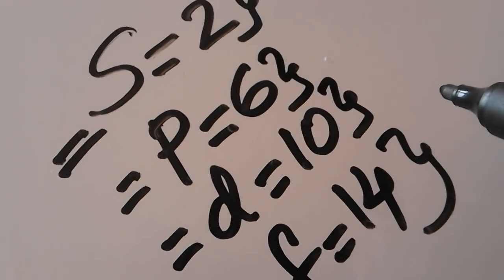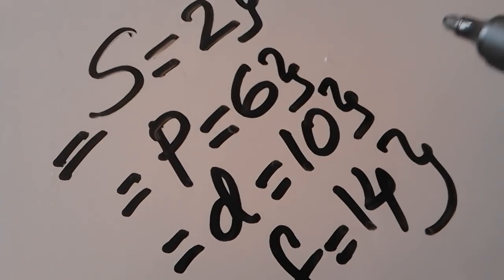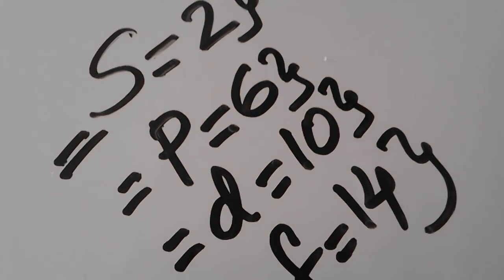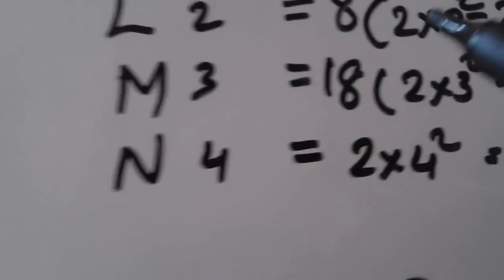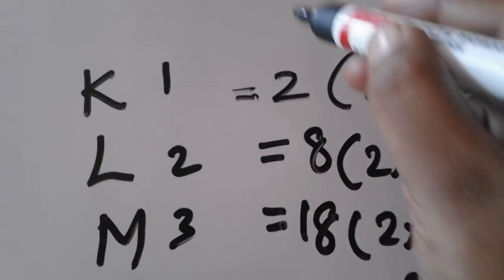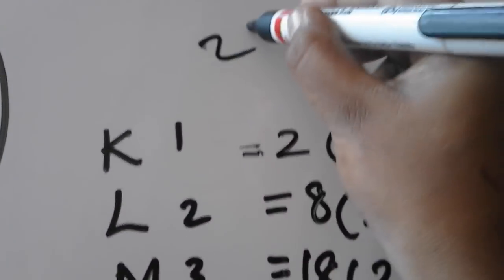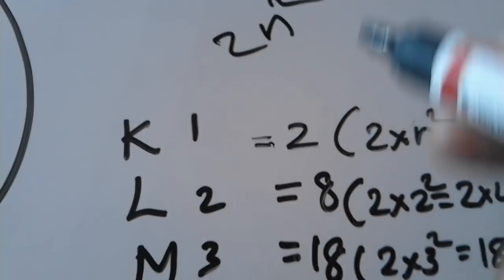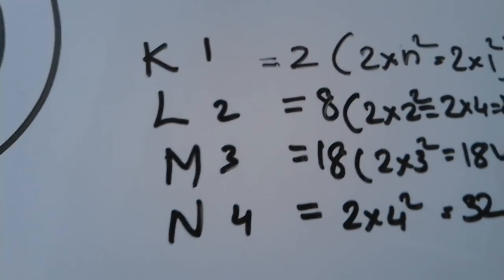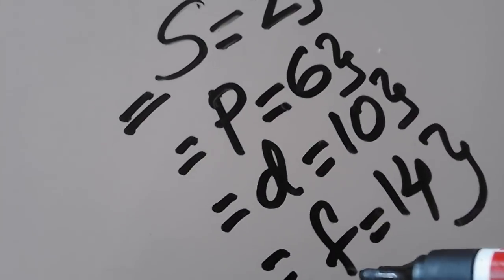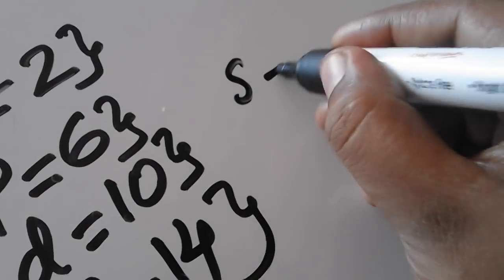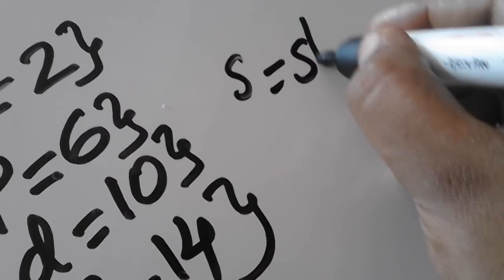So this gives 2, N2. What is it? Here is S, P, D, F. S stands for Sharp.